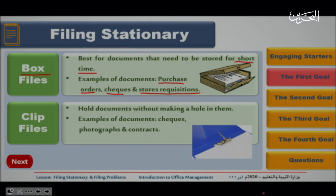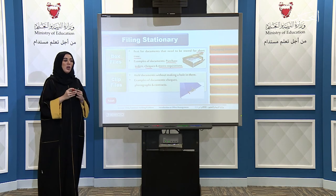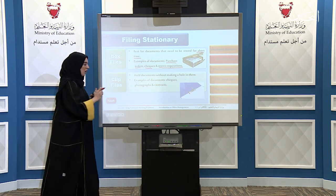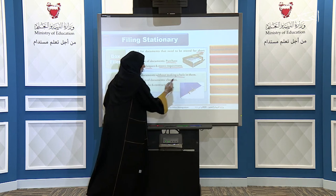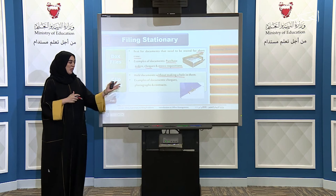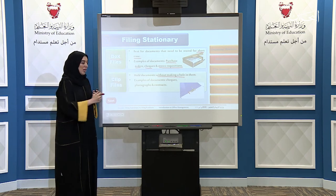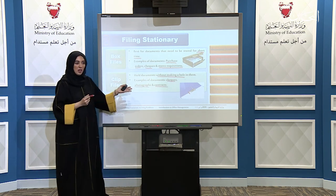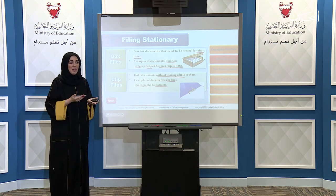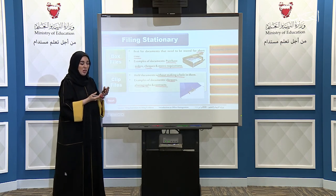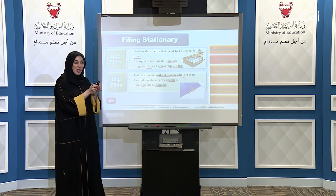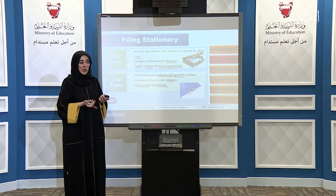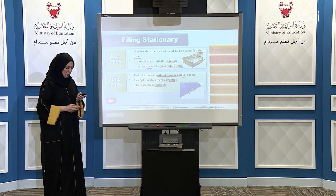The next filing type is the clip file. From its name, it has a clip. This file holds documents without making a hole in them — you do not punch it. Documents used with this file include checks, photographs, and contracts, because these documents have important information. If you punch a hole in the paper, you may lose a number or a letter, so we put them in a clip file.